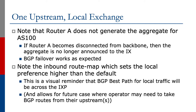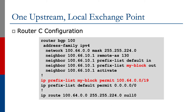You'd end up cutting yourself off from the local peers. So the best practice is: if the router is remote from your network, do not generate the aggregate on that router. Notice also the inbound route map which sets local preference higher than the default — it's a visual reminder that the BGP best path for local traffic will be across the Exchange Point, and it allows for the future case where the operator may take BGP routes from upstream providers. If we look at Router C's configuration — the one connecting to the upstream — we simply allow the default route in and send our aggregate out, as we did before.